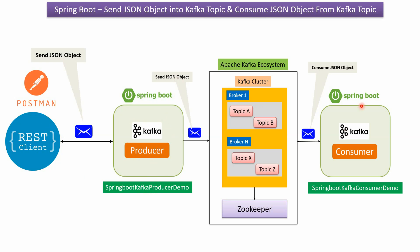And here you can see another Spring Boot application. The Spring Boot application name is Spring Boot Kafka consumer demo. It has consumer code. Using that, it will consume the JSON object from the Kafka Topic. We will see this example.